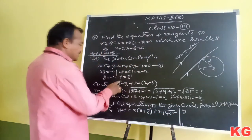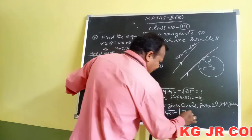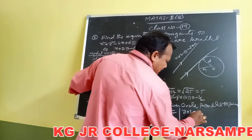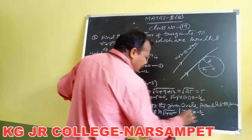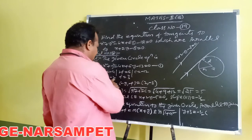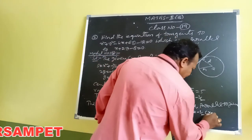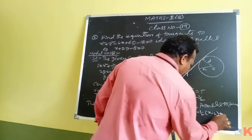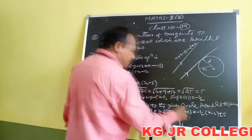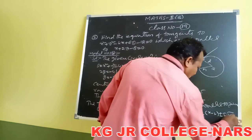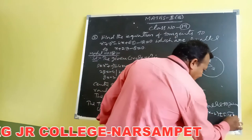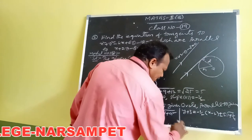Here f equals 3, so y plus 3 equals. The slope M is minus 1 by 2 of x plus g. Here g equals minus 2, so x minus 2, plus or minus r. Here r equals 5, under root of 1 plus M squared. M equals minus 1 by 2, M squared equals 1 by 4.